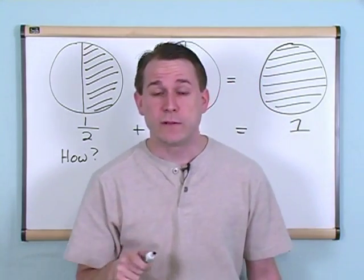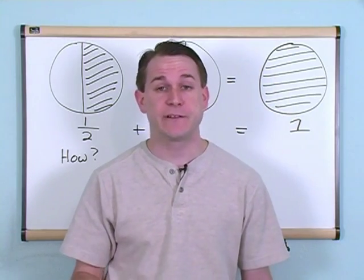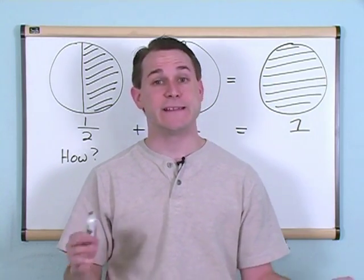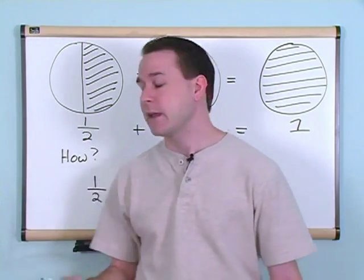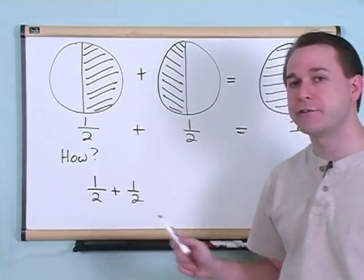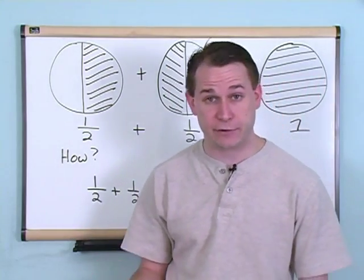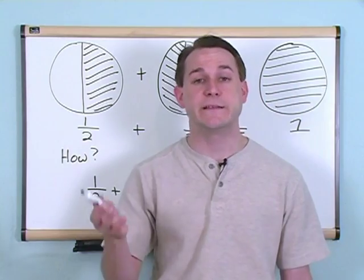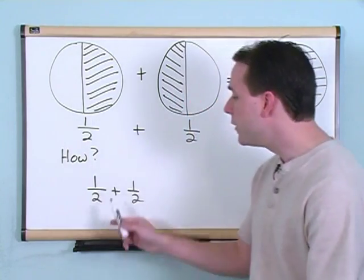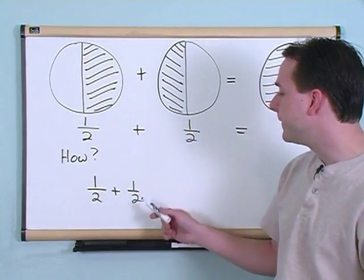The one rule of adding and subtracting fractions that you're going to have to learn, and it's not hard, is this: In order to add any two fractions together, the denominator of the fractions must be the same, they must be equal. So here the denominator is two, here the denominator is two.